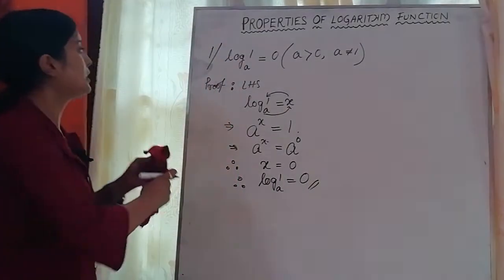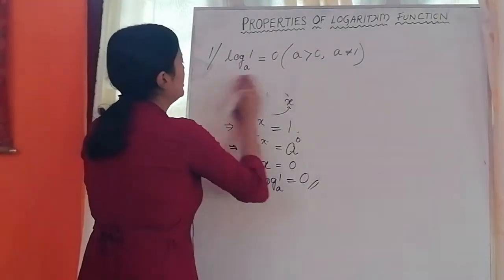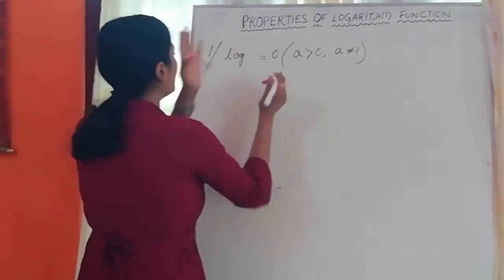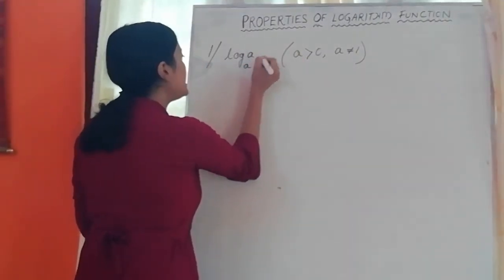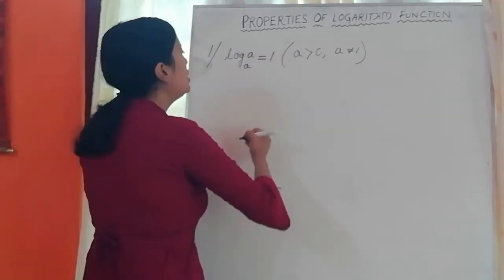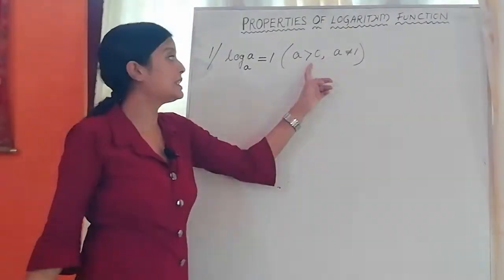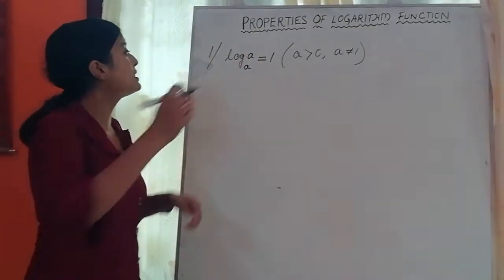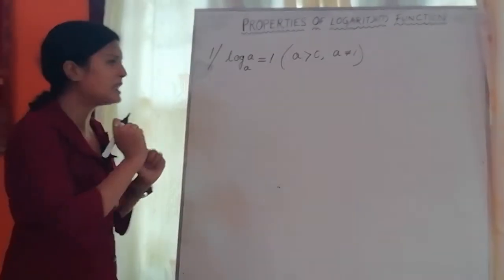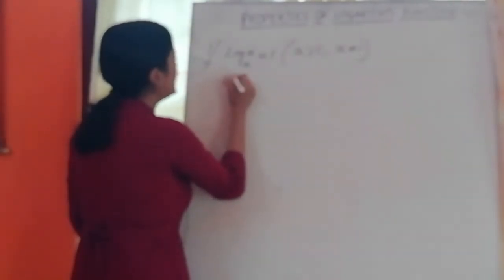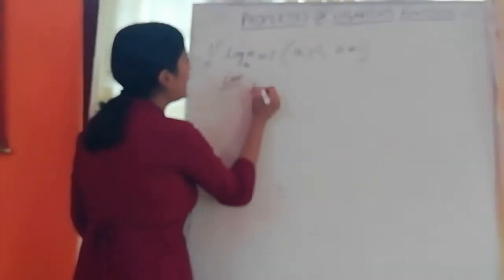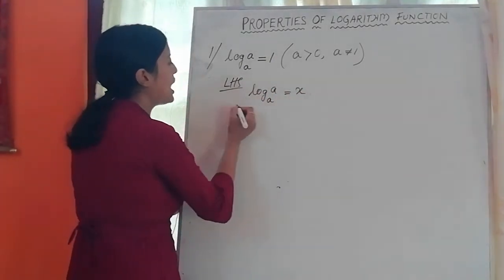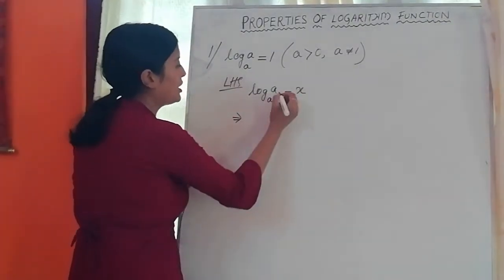Let's take the next proof. Our second property is: log a base a is equal to 1, where a is greater than 0 and a is not equal to 1. Let's prove that log a base a equals 1. I will show you the left-hand side: let log a base a equal x, and convert to exponential format.